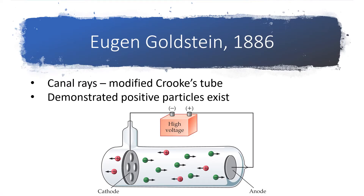Also roughly in the timeframe of the late 1800s, a scientist named Goldstein discovered that in addition to the cathode rays flowing through cathode ray tubes, if you looked for rays going in the opposite direction, you would find them. In our modern understanding, these are protons — positively charged particles going the opposite direction of the cathode rays. But the term proton wasn't invented until about 1910, so in the meantime they were referred to as canal rays.